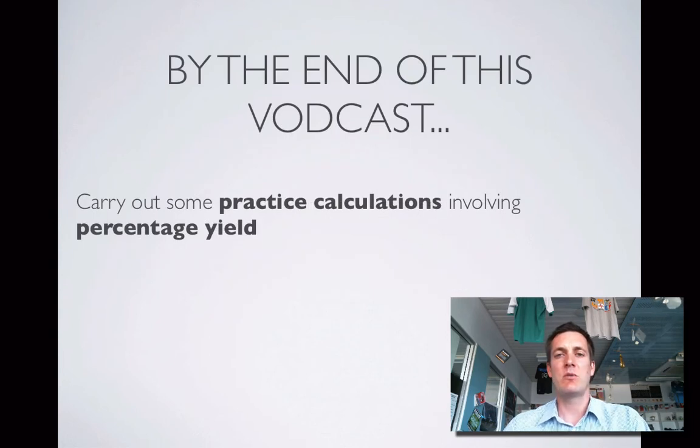So that is basically what we're saying here: a percentage yield tells us what percentage of what we could have made looking at the balanced equation have we actually made, just to try and make that a little bit clearer here's an example calculation.